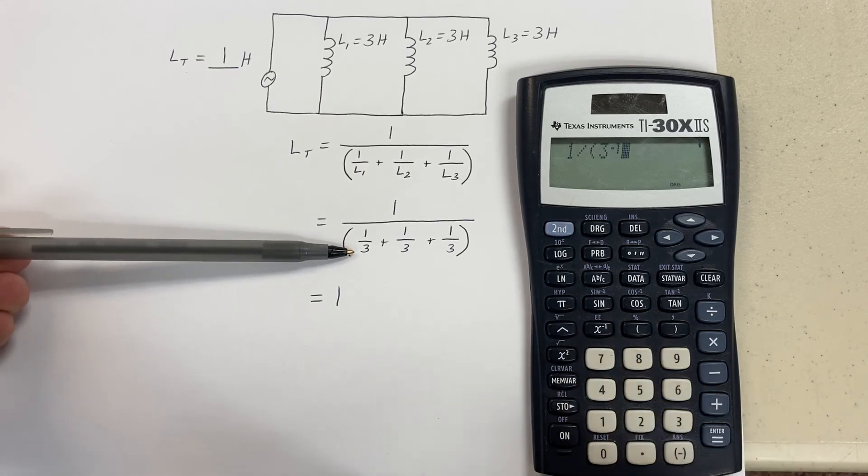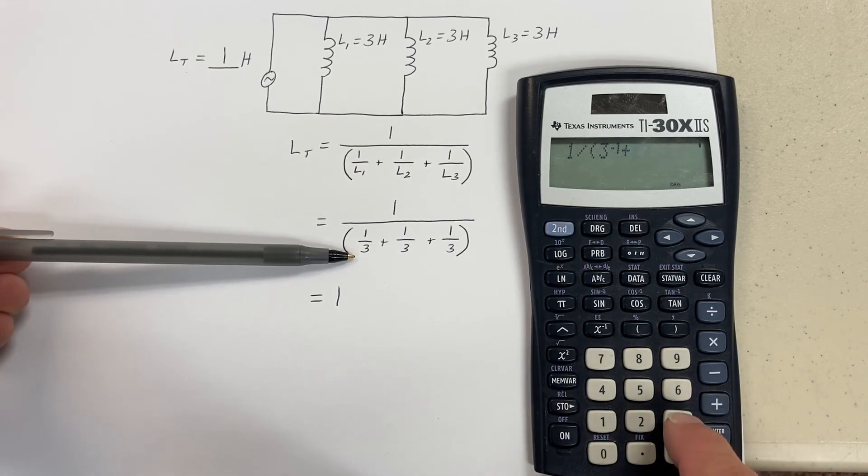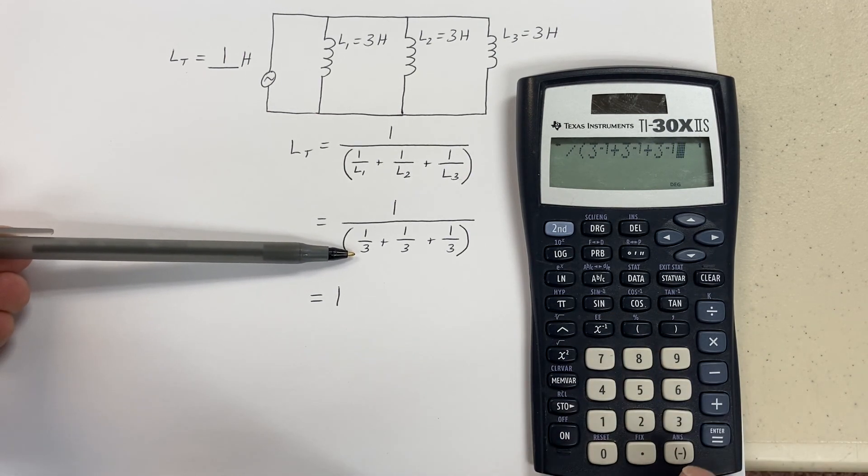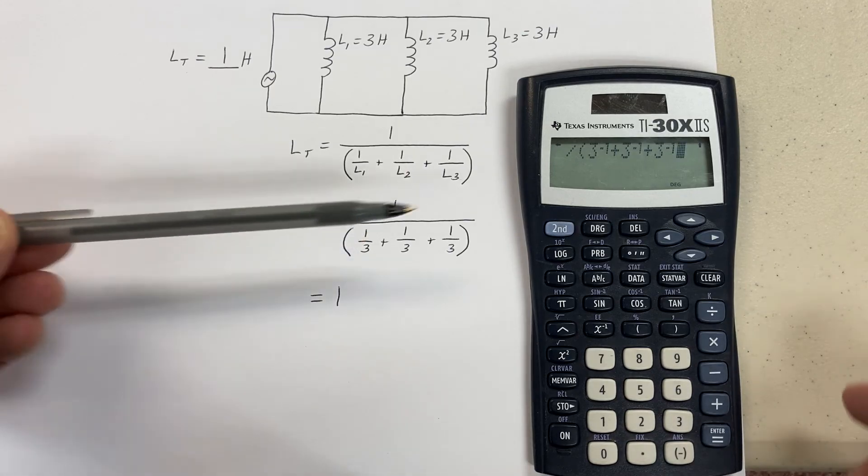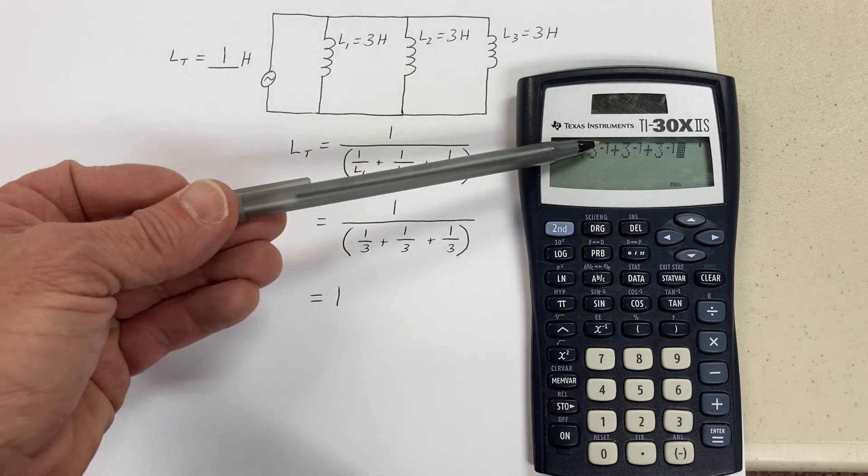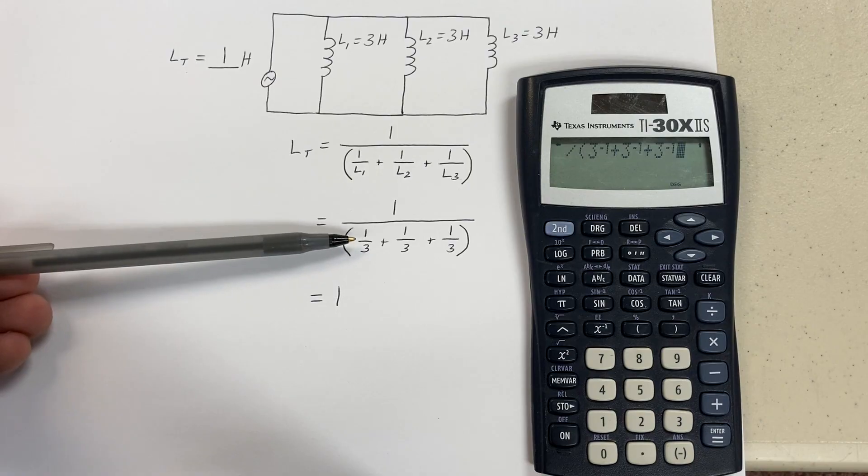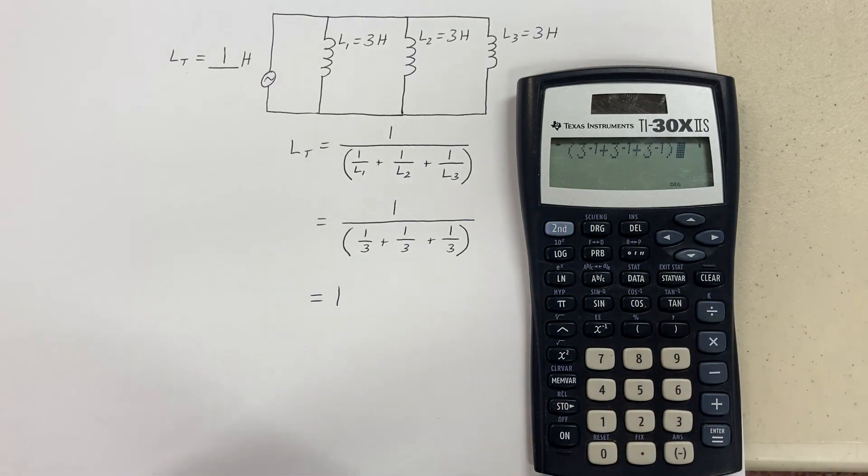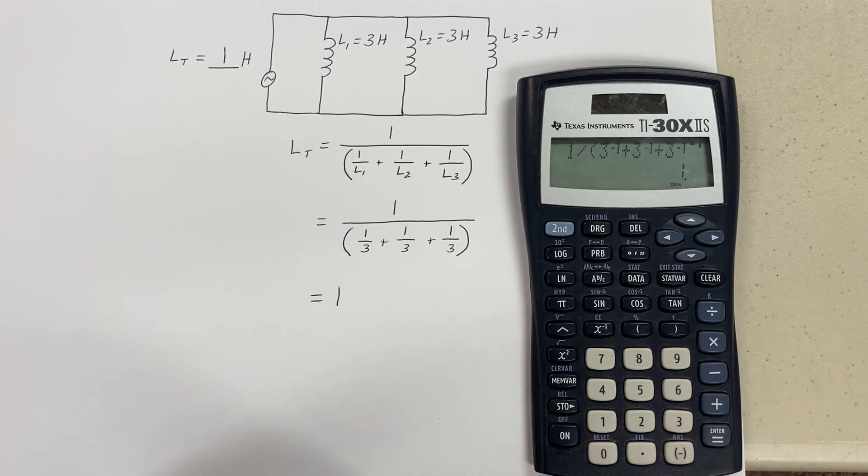Plus three inverse key, plus three inverse key. And what I did - each of those threes with the negative one is essentially one third plus one third plus one third. I can close the parentheses if I want, and what's my answer? Sure enough, it's one Henry.